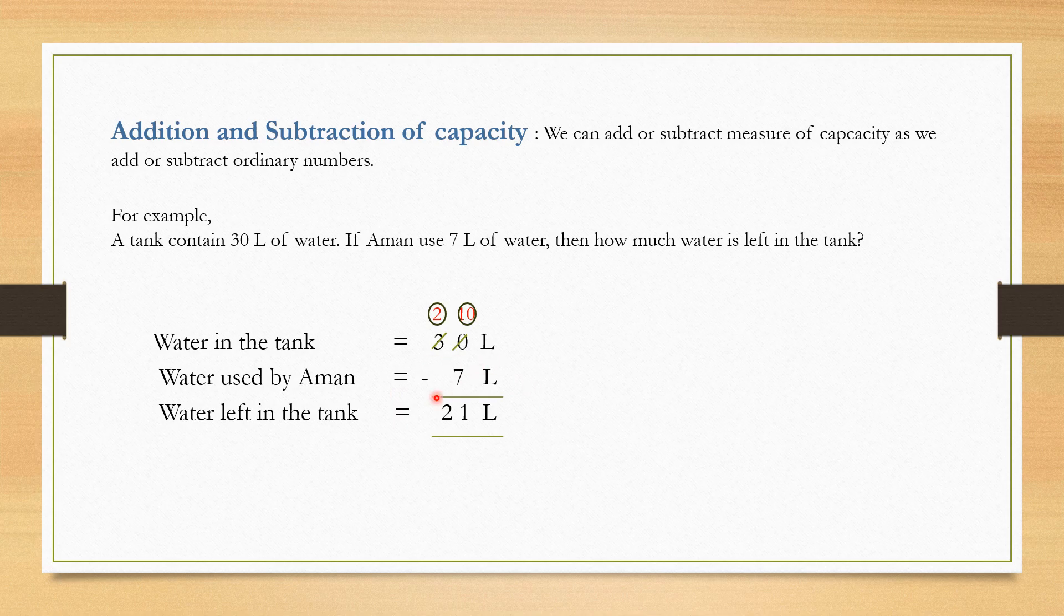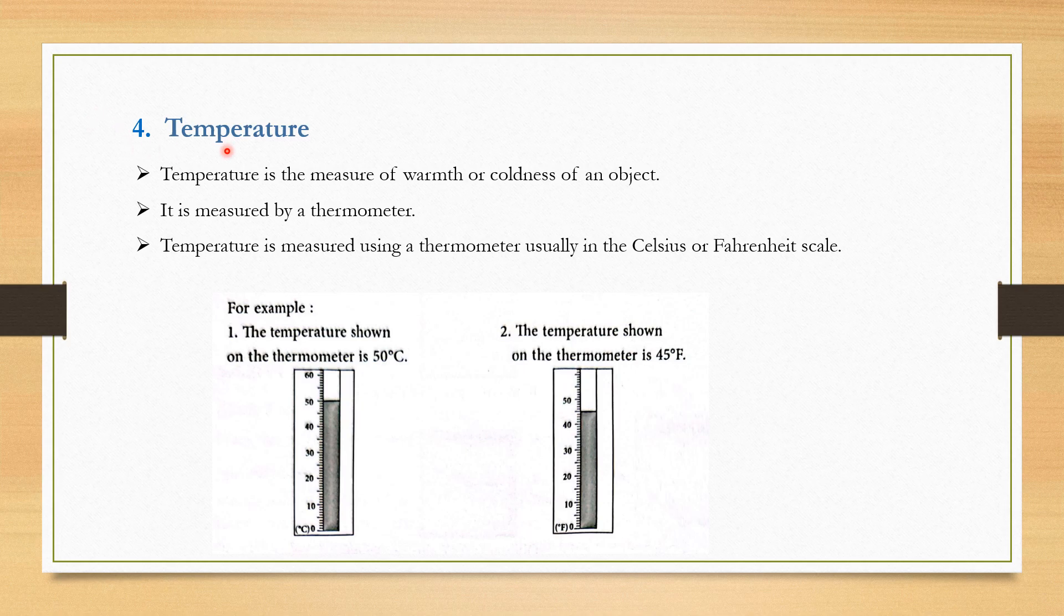30 liter minus 7 liter equals the water left in the tank which is equal to 21 liter. The next topic is temperature.